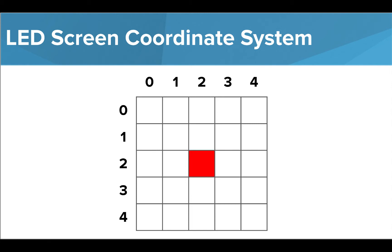So the center LED is going to have a coordinate value of 2, 2 because it has a value of 2 in the x direction and 2 in the y direction. And the LED highlighted here is going to have a coordinate value of 1, 4 because it has a value of 1 in the x direction and 4 in the y direction.